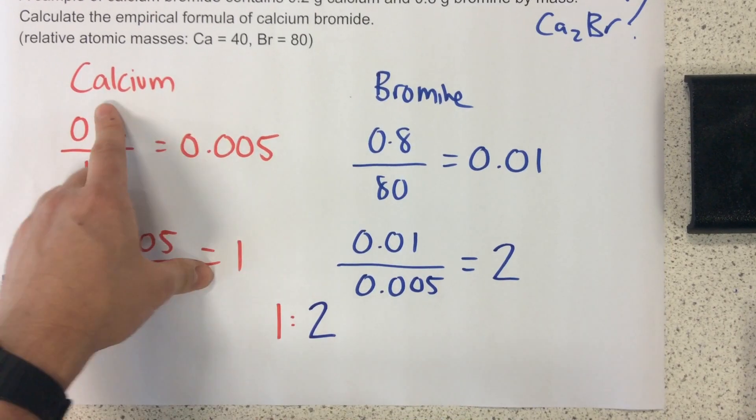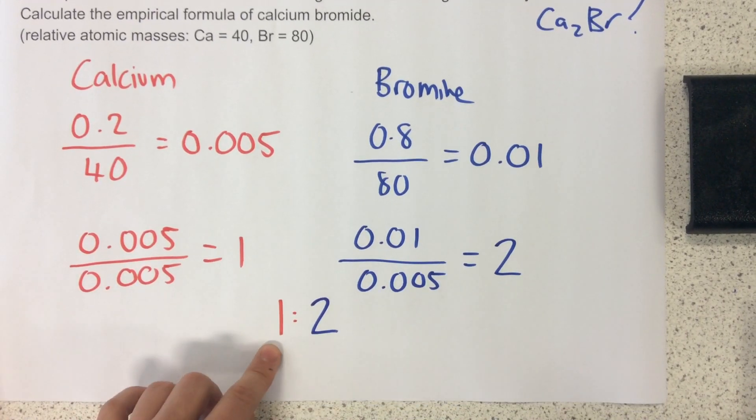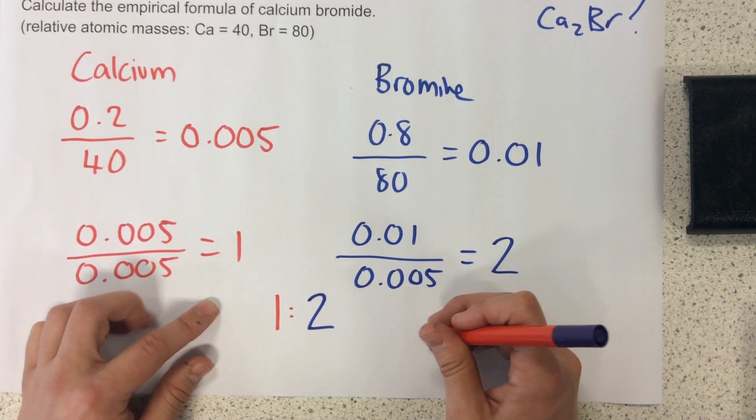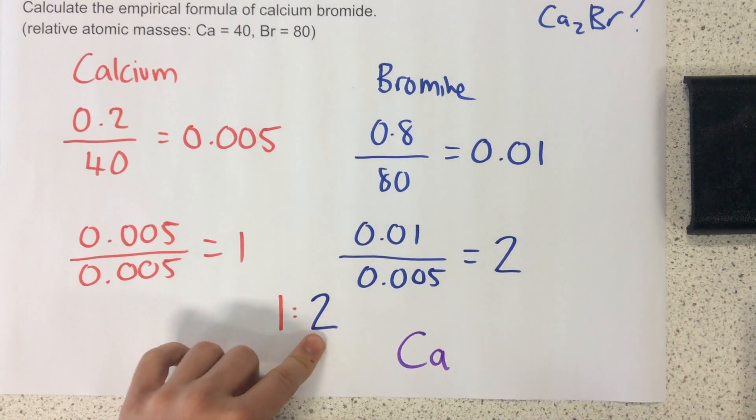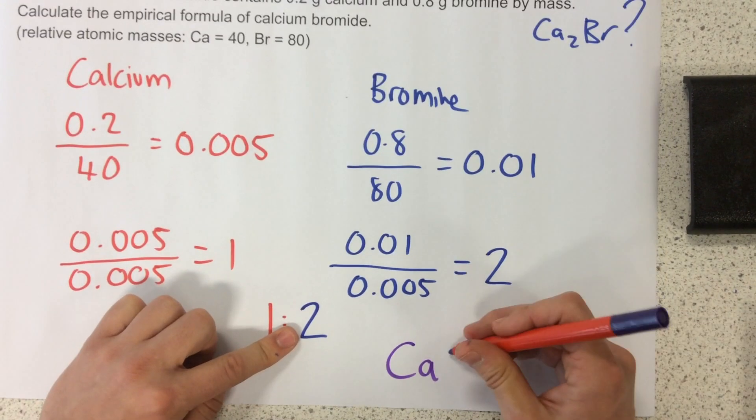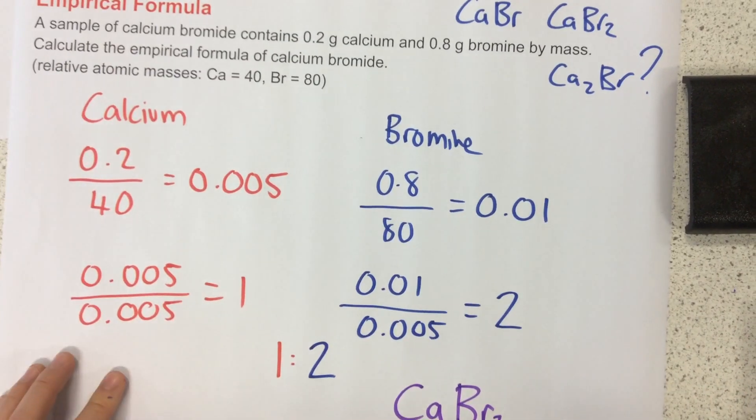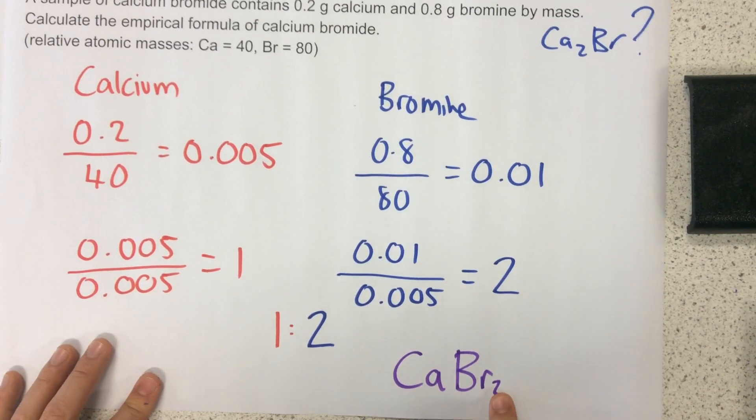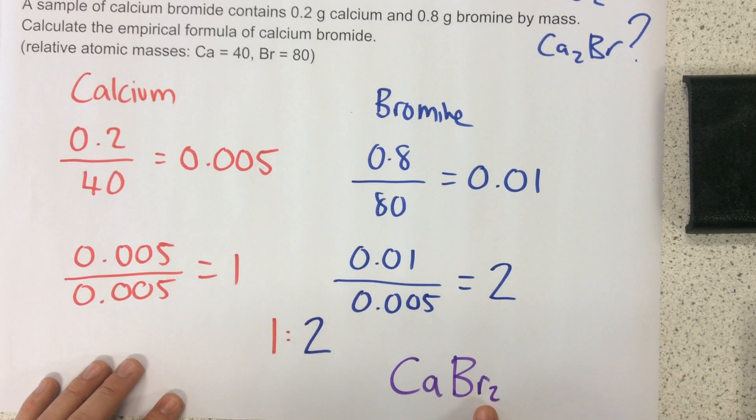So then, how do I finish this off? By writing my empirical formula. So if I've got one calcium, I just write Ca. And if I've got two bromines, I do Br2. So this here is the empirical formula of calcium bromide.